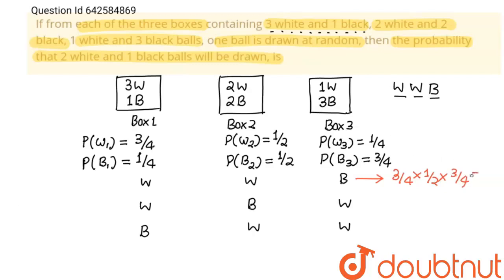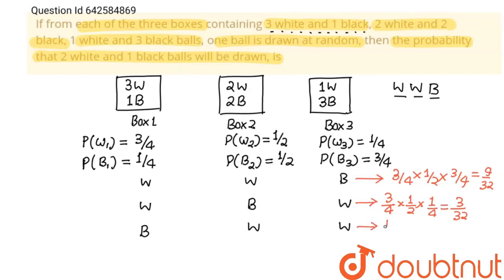For the first case, the probability is 3/4 × 1/2 × 3/4 = 9/32. For the second case, the probability is 3/4 × 1/2 × 1/4, and for the third case, the probability is 1/4 × 1/2 × 1/4, which equals 1/32.